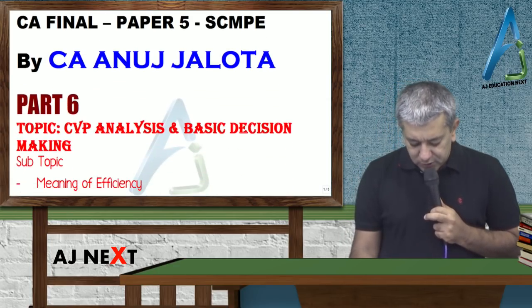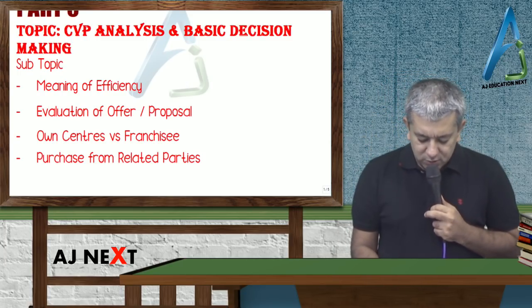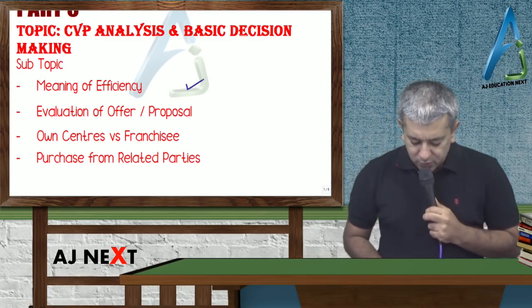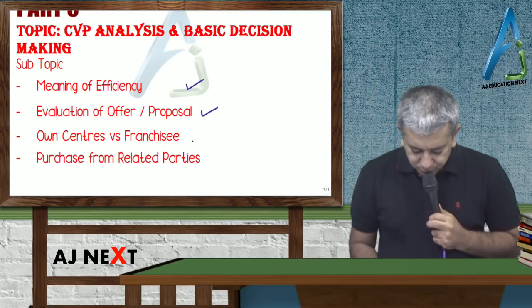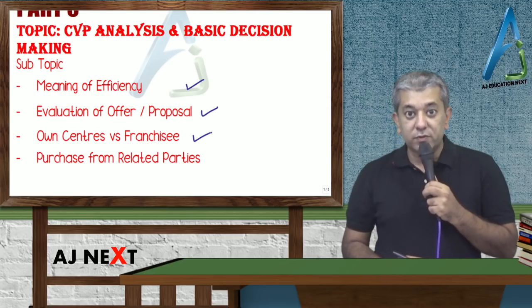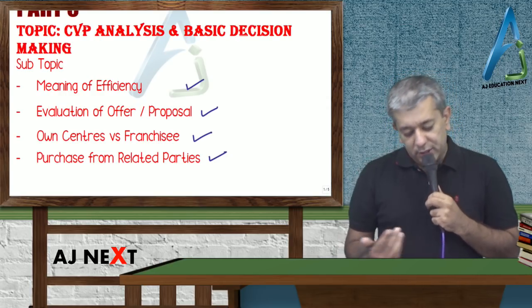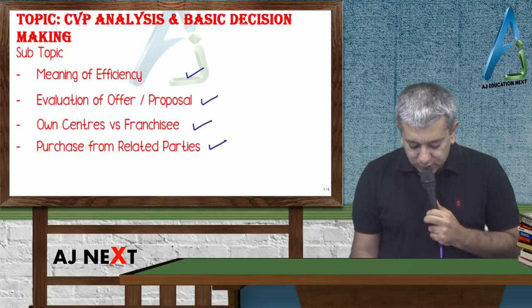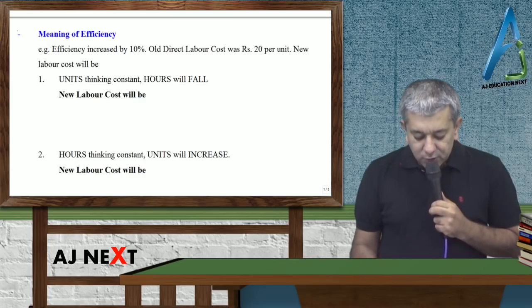So this is part number 6. In this, I am going to be trying to cover up four parts: 1. Meaning of Efficiency, 2. Evaluation of the Proposal or Offer, 3. Own Centers vs. Franchisee Centers, and 4. Purchases from Related Parties. So, we will start today's lecture. Welcome back to Super Quick Revision of SCMPE. Let's start.